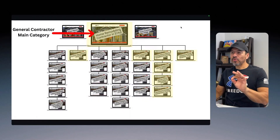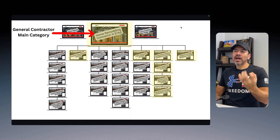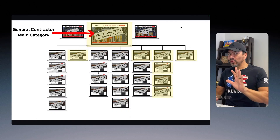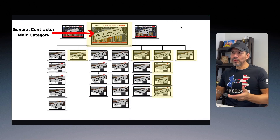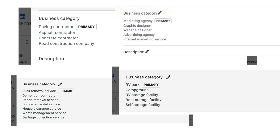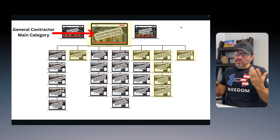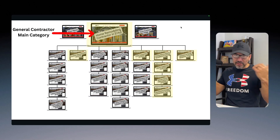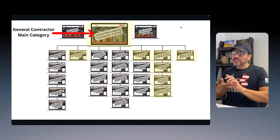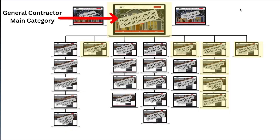Let's say you are a home remodeling contractor. This is how I would structure the website for Google to take the business seriously and see that you have enough topical authority in home remodeling for your location. Google gives you a Google Business Profile for free — you select categories. If you're a home remodeling contractor, your main category might be general contractor, with subcategories like kitchen remodel, bathroom remodel, and deck building. You then build out pages for all the services you provide.